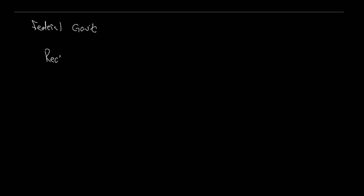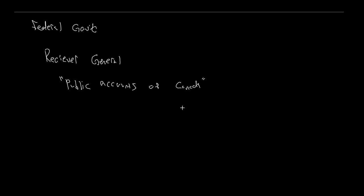Starting off with the federal government: financial statements for the Government of Canada are prepared by the Receiver General. The Receiver General prepares and publishes these every year under the title Public Accounts of Canada. This is all done in accordance with the Financial Administration Act, and these public accounts are prepared every year for fiscal year end, which is March 31st.